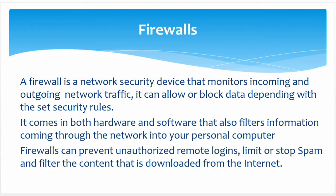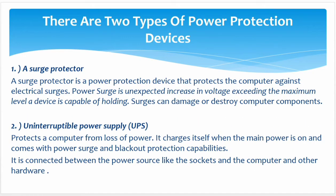There are two types of power protection devices. The first is a surge protector, which could be a surge-protected extension cable. A surge is when voltage is higher than expected — higher than what your computer, printer, or other gadget can handle. A surge-protected extension cable keeps your devices safe, because power surges most commonly damage the power supply of the system unit or printers.